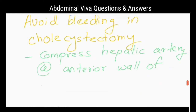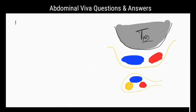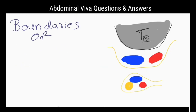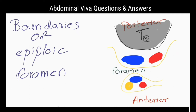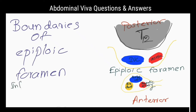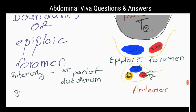This is called Pringle's maneuver. What are the other boundaries of the epiploic foramen? Posteriorly, the inferior vena cava. Inferiorly, the first part of the duodenum. Superiorly, the caudate process of the liver.